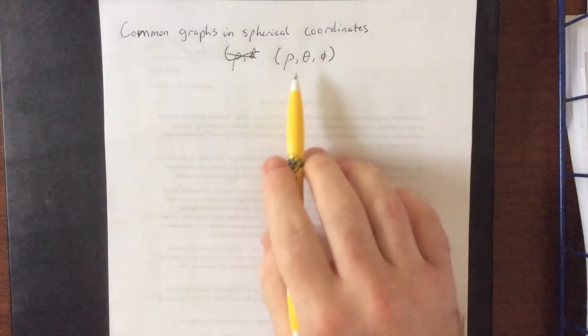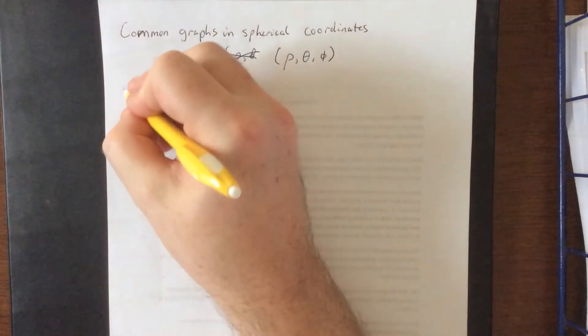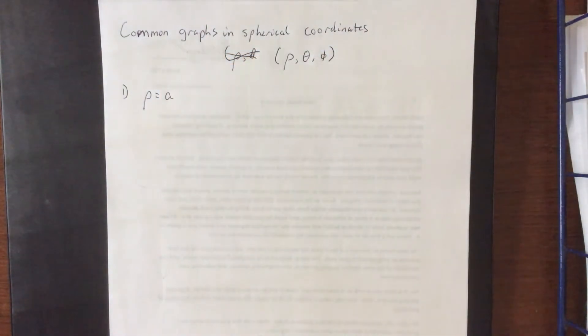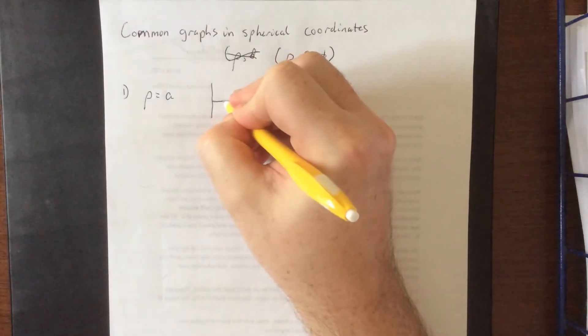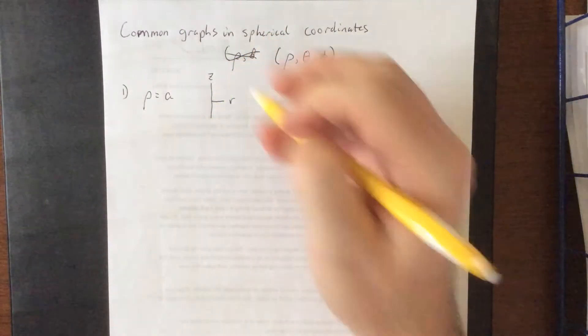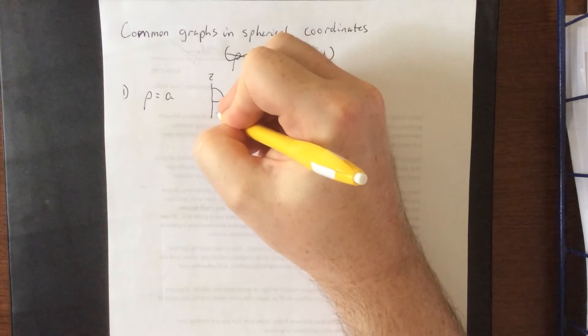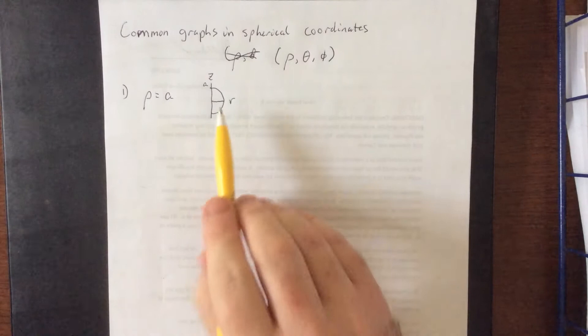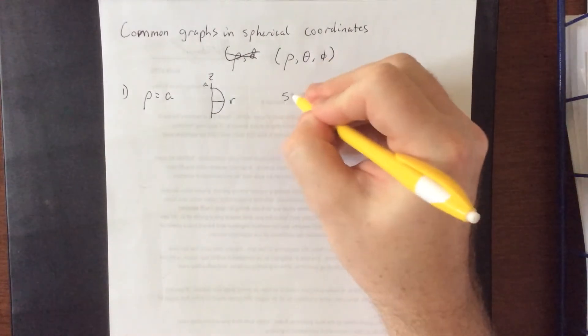So let's go over the basic examples of where any one of these is set equal to a constant. First possibility, let's say rho is equal to a. Now in terms of interpreting this, in terms of the Rz trace, if we say rho is equal to a constant, what we're saying is that we're talking about all of the points that are a nice constant a units away from the origin. Now if I were to take this shape and rotate it about the z-axis, I would get a sphere out of this.